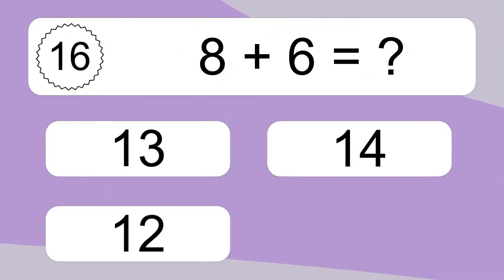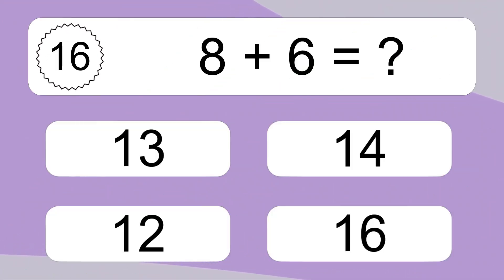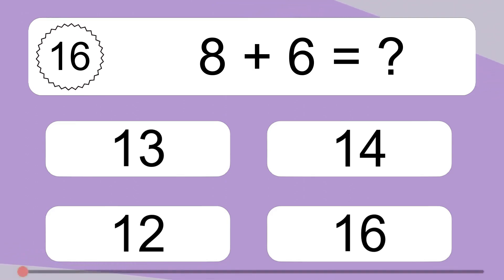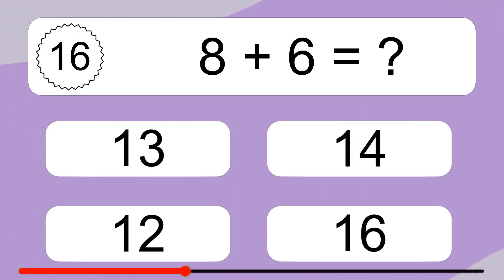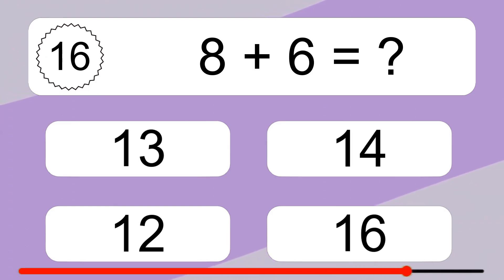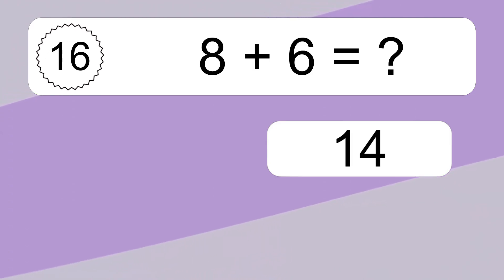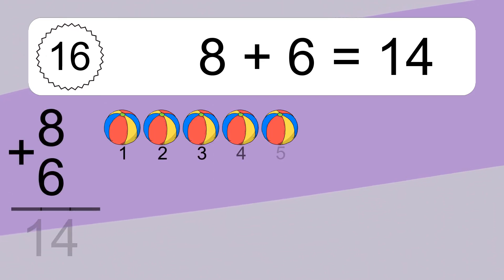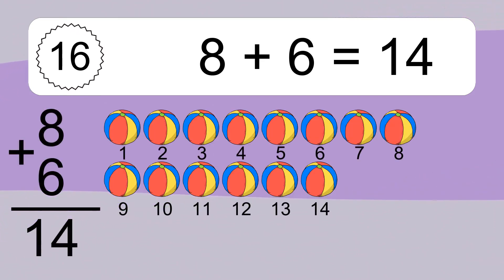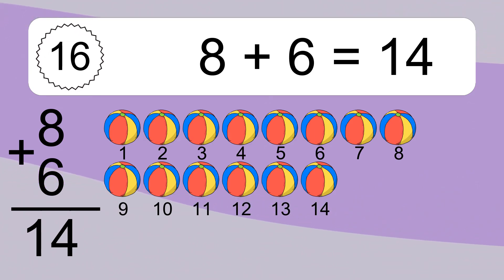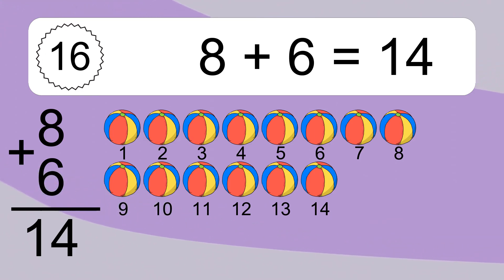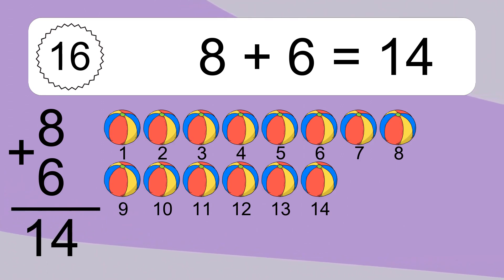Eight plus six equals what? Eight plus six equals fourteen. Let's count it: one, two, three, four, five, six, seven, eight, nine, ten, eleven, twelve, thirteen, fourteen.